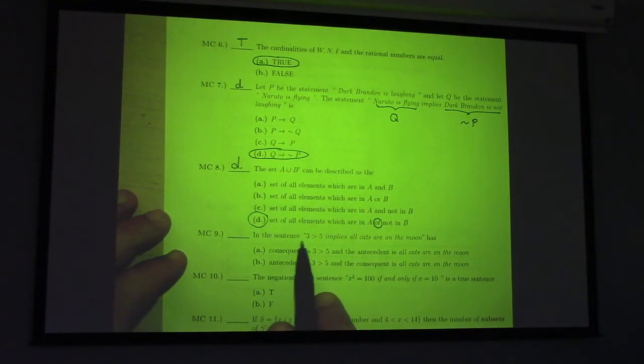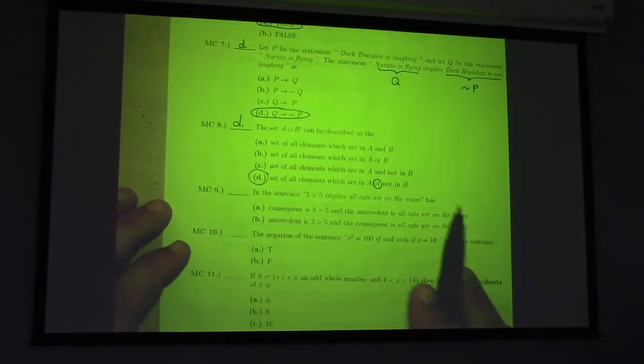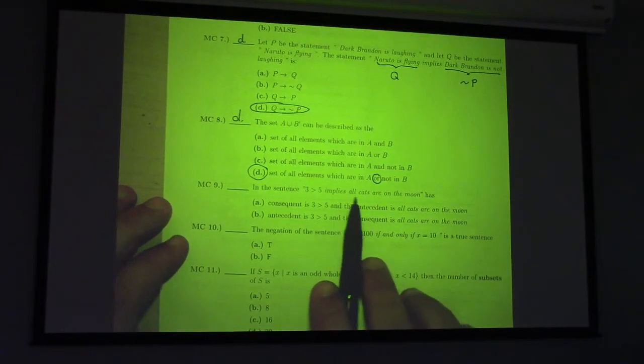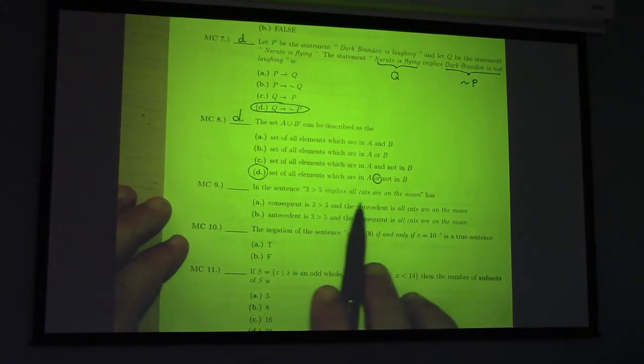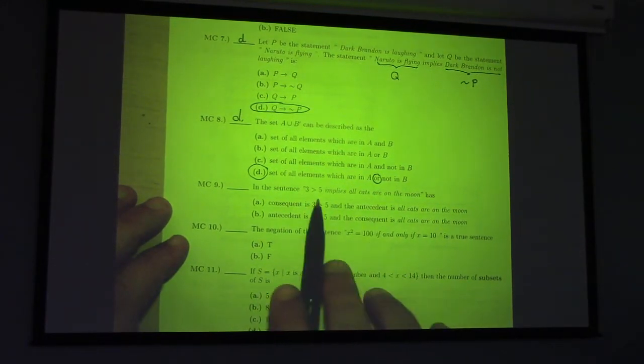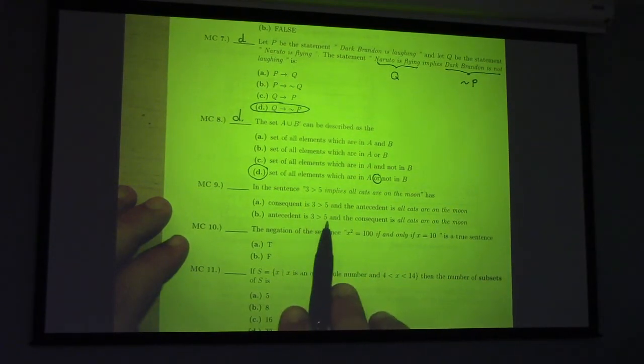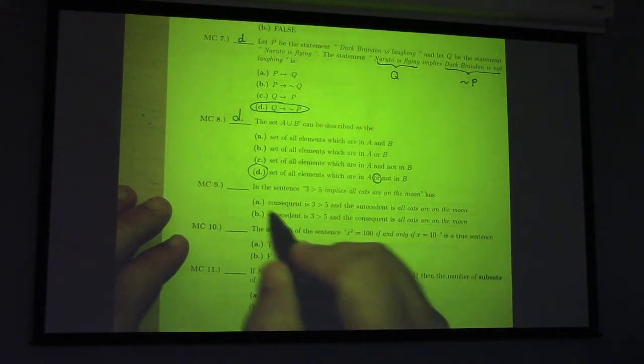In the sentence, three is greater than five, implies all cats are on the moon, what is the consequent? What is the antecedent? The antecedent is three greater than five, the consequent is all cats are on the moon, so the answer here was...